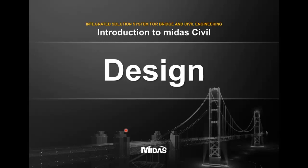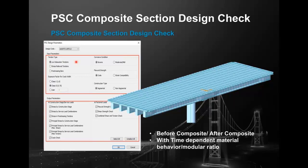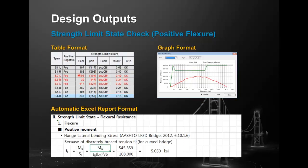Midas Civil is not only an analysis tool — it's also a design tool. A complete workflow from modeling to design can be done in one software. Once analysis results are validated, you proceed to design features covering complete PSC section design and PSC composite section design. You select the design code and give parameters, and the program performs PSC checks: stress at construction stages, service load combination stress checks, flexural strength and ultimate limit state checks, shear strength checks, and combined shear-torsion checks. Results are given in table format, graph format, and automated Excel report format.